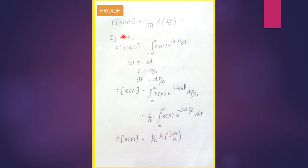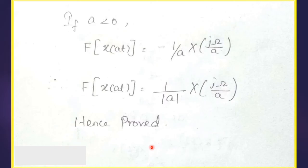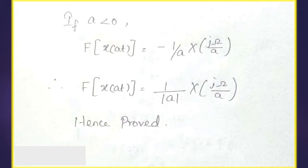For case 2, when a < 0, following the same procedure gives −(1/a)·X(jω/a). Combining both cases, the Fourier transform of x(at) = (1/|a|)·X(jω/a), where the modulus of a represents both positive and negative values. This property is proven.